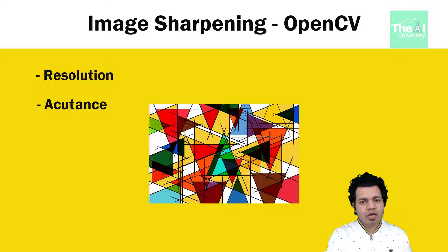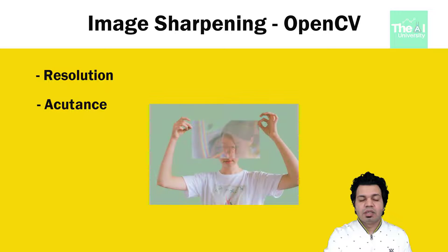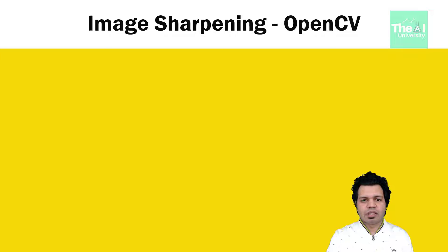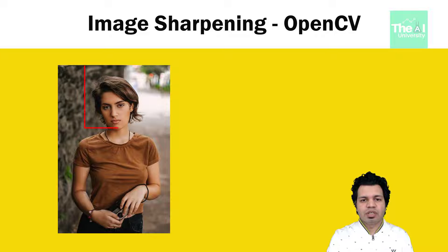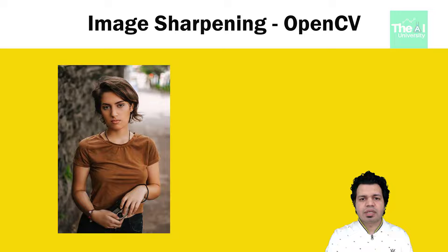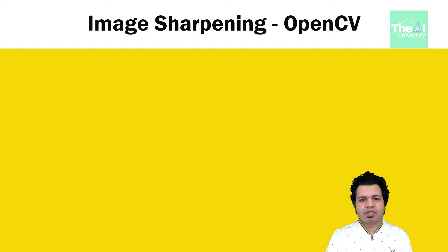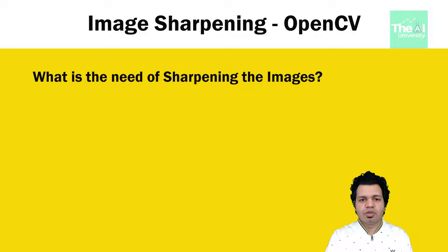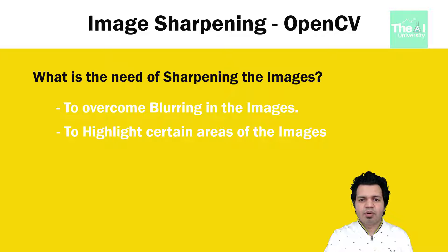Sharpness therefore defines the details in an image. For example, if a subject's face is blurred, distinct features like nose, eye, and mouth won't appear sharp. If most people can clearly point out which is the nose and which is the eye in an image, then you can consider that a sharp image. So sharpening is a technique for increasing the apparent sharpness of an image, or emphasizing its edges. There are three main reasons to sharpen: to overcome blurring introduced in the image, to highlight certain areas prominently, and to increase legibility.